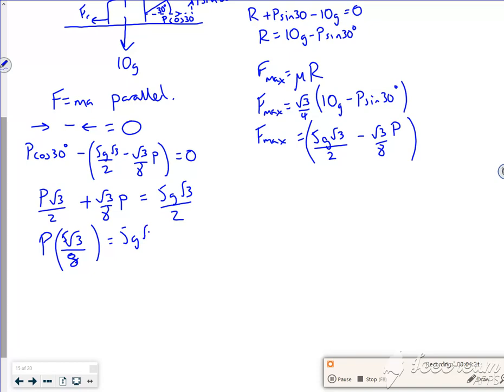It's 5g root 3 over 2. So then if I multiply through by 8 over 5 root 3, it gives me 39.2 newtons. So any force where P is greater than 39.2 newtons will move, mean that it moves. Moves it.